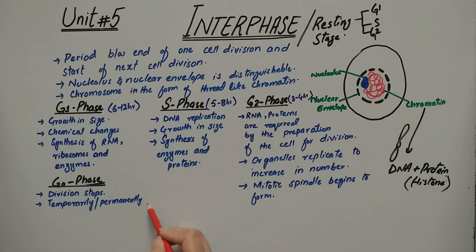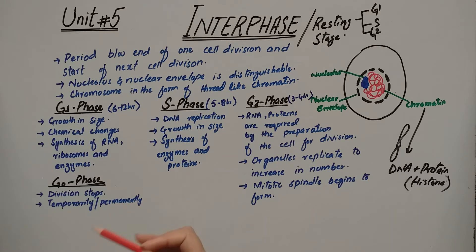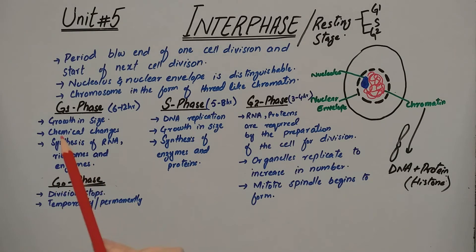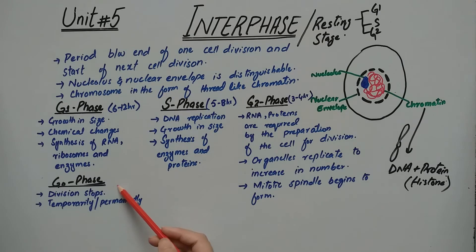In G0 phase, cell division stops but cells perform their own specified functions. For example, permanently — neurons are present in your body performing their job but they are not dividing. Some cells are semi-permanently stopped, like kidney and liver cells, which restart division when they get signals. Epithelial cells — your skin cells — are always dividing and never enter G0 phase.